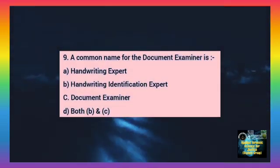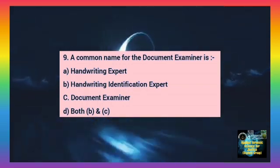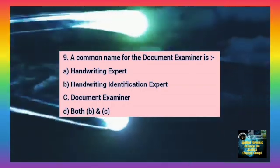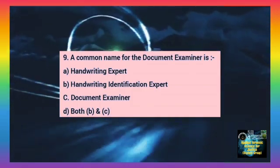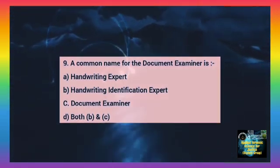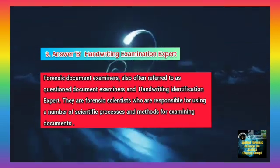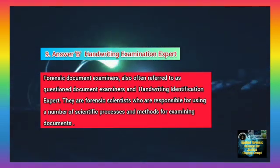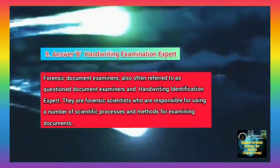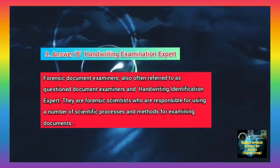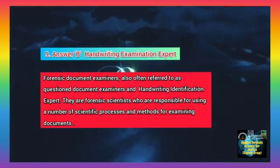Question number 9. A common name for the document examiner is — Option A: Handwriting expert. Option B: Handwriting identification expert. Option C: Document examiner. Option D: Both B and C. The correct answer is B, handwriting identification expert. Forensic document examiners are also often referred to as question document examiners and handwriting identification experts. They are forensic scientists responsible for using scientific processes and methods for examining documents.